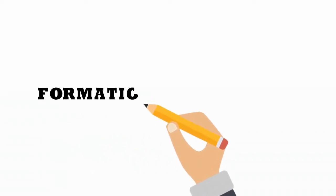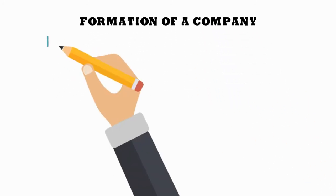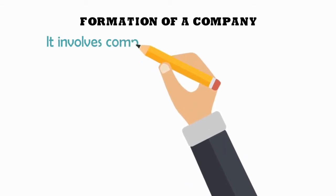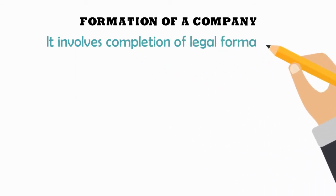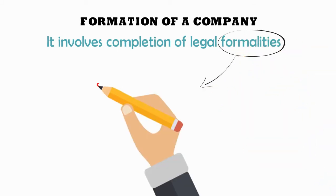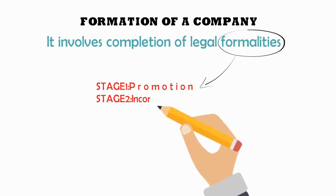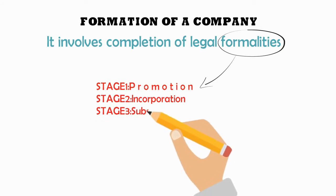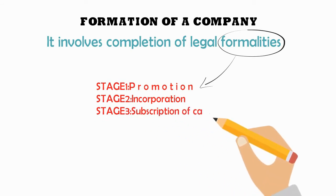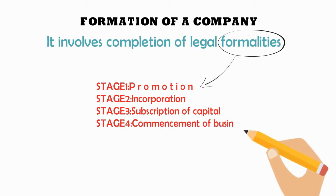Formation of a company, especially in India, involves completion of several legal formalities. These legal formalities are divided into four distinct stages. The first stage involves promotion, the second stage involves incorporation — where we have to get a certificate of incorporation from the government — the third stage involves subscription of capital, and the fourth stage involves commencement of business.